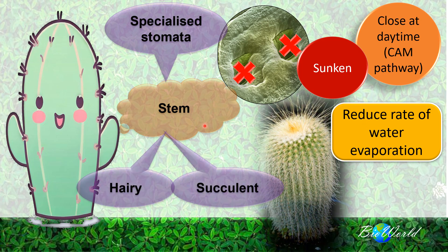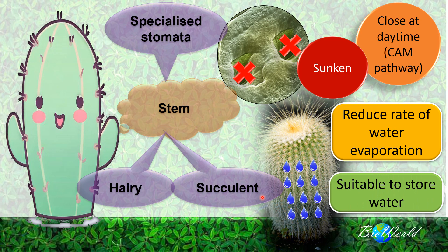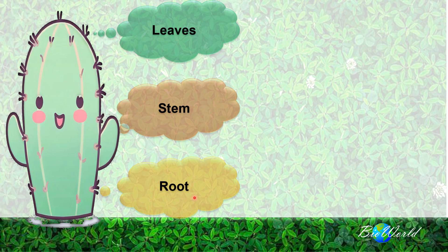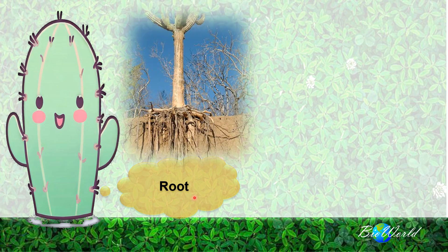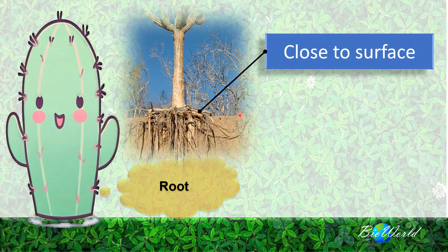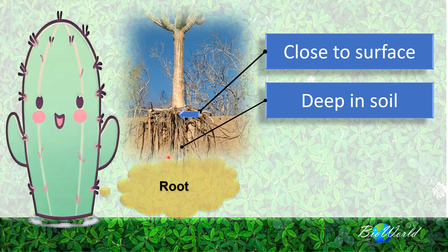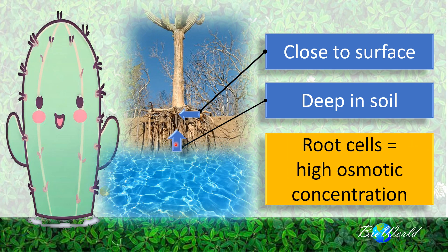Added to that, the stems of xerophytes can also be found to be hairy and fat because they are filled with water — we call this succulent. This makes them very suitable for storing water. Moving on to the adaptation of xerophyte roots: the first type grows close to the soil surface to take advantage of rainwater, absorbing it the moment it wets the soil. The second type grows deeper into the soil so that the roots can seek out sources of water located deeper down. Both types of roots have high osmotic concentration, which promotes osmosis.